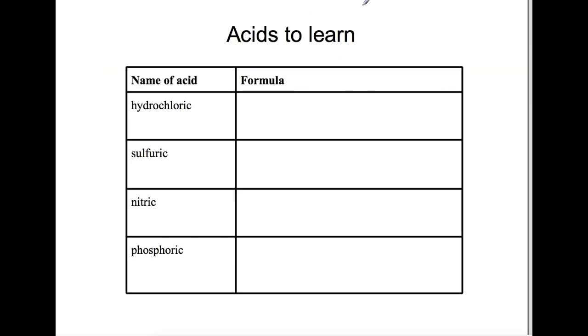There are certain acids that you need to learn and the formulas for. So hydrochloric acid is very simple, it's HCl. Sulfuric acid is H2SO4. Nitric acid is HNO3, and phosphoric acid is H3PO4.